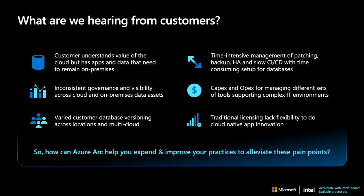Customers understand that going to the cloud is important, but they can't quickly switch their apps and data to the cloud at the click of a button. They have a very complex environment to manage — patching, backup, integrating with their CI/CD pipelines — and it's very time consuming. Many of these databases are mission critical, so you can't have downtime. With disparate clouds running their SQL databases — some in Azure, some in third-party clouds, some on-premises — governance and visibility across all these resources is critical for DBAs.